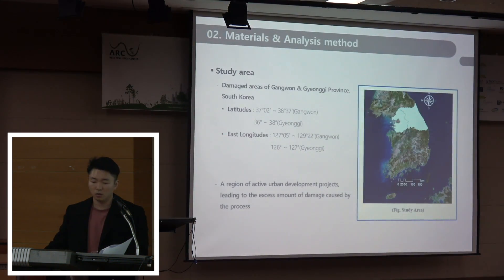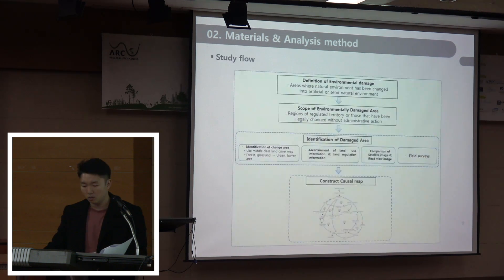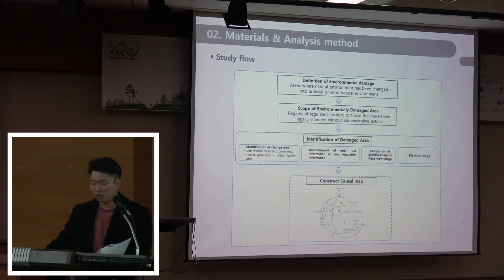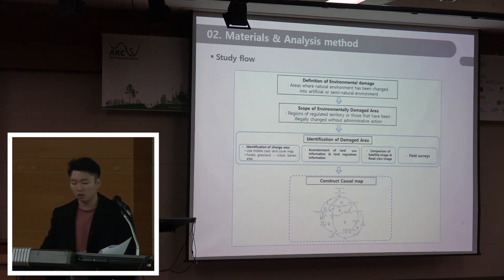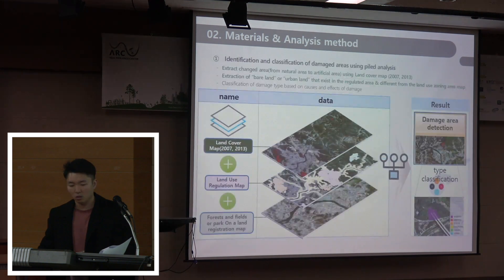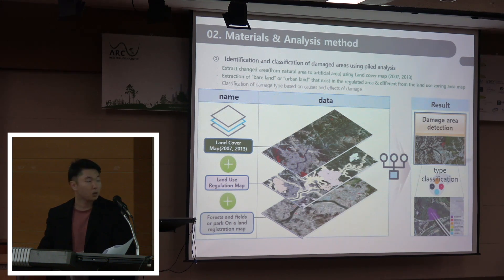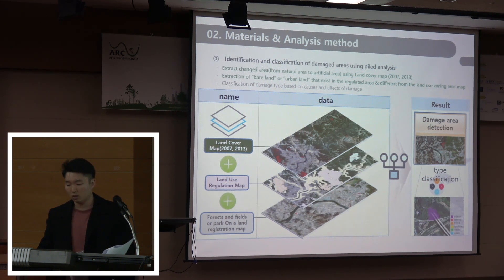The study area is Gangwon and Gyeonggi province in South Korea. The scope of the environmental damaged area is the regions of the regulatory area that have been illegally changed with an additional treatment action. To identify this area, we use three maps, including a regulation map and an extent map. Using these maps, we detected the damaged area in the study province and classified the damage types.